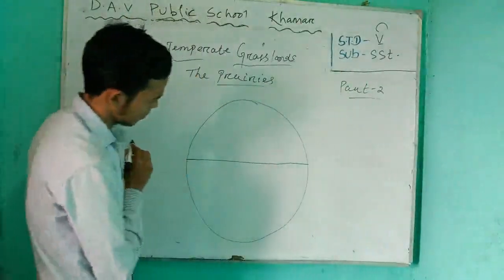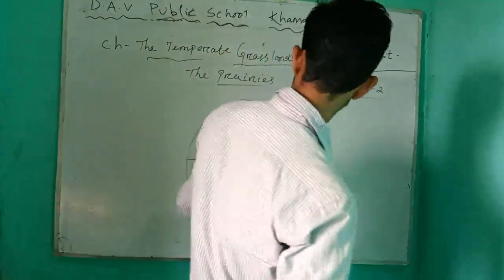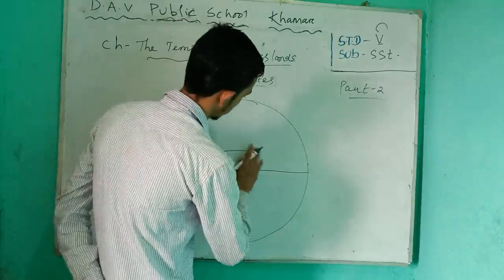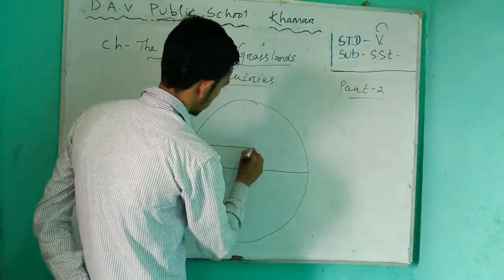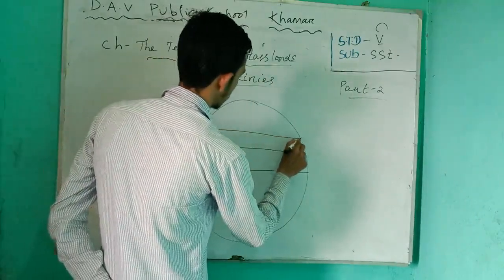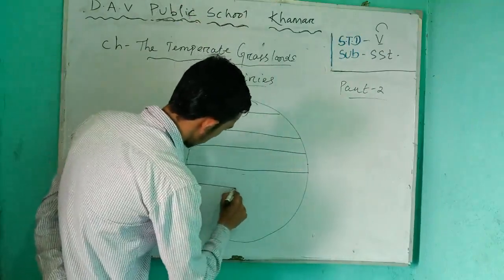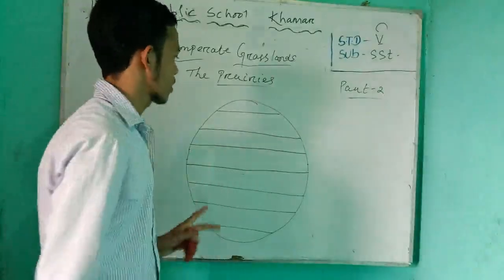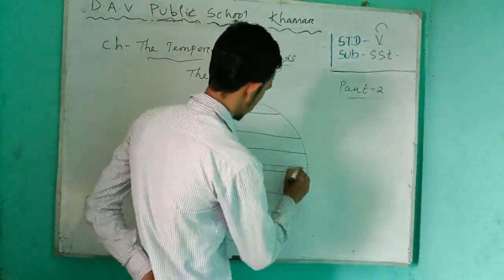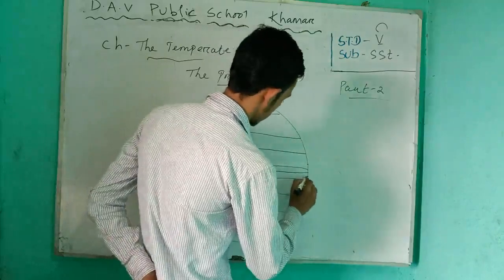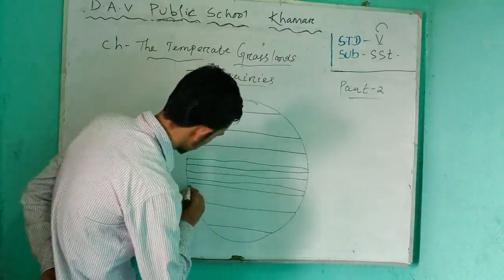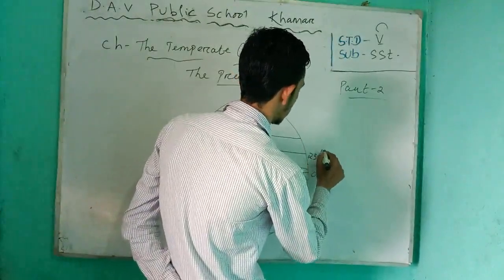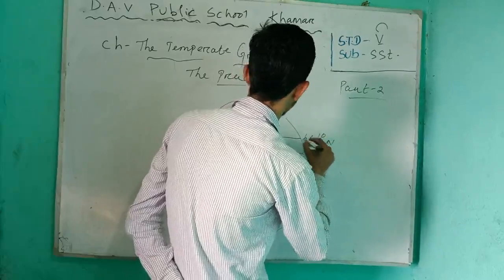So it is zero degrees — okay? That is 23.5 degrees north, and 66.5 degrees north. In the upper part take 5 degrees, and the lower part also take 5 degrees. So: 0 degrees, 23.5 degrees north, 66.5 degrees north — that is 90 degrees.